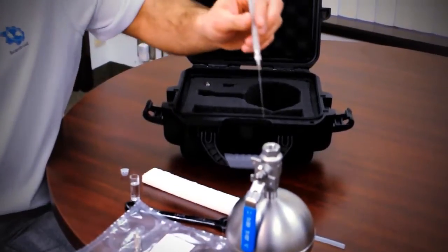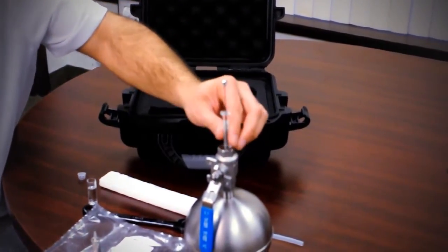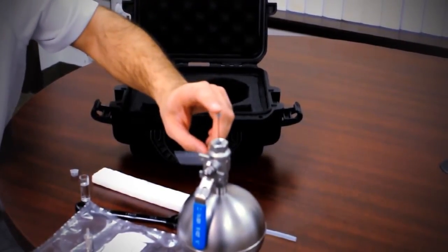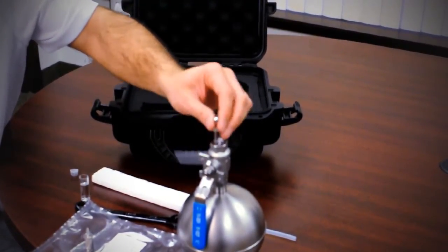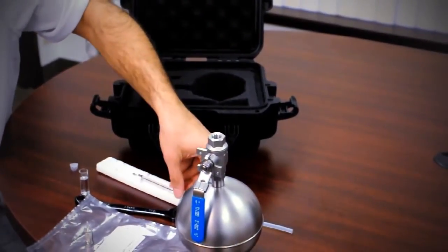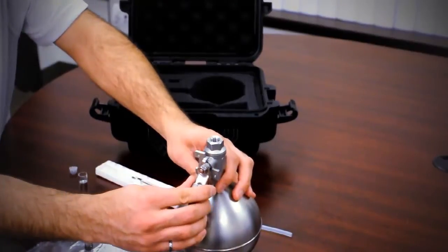We then insert the syringe all the way into the canister, empty out the syringe, shake it to make sure everything gets into the canister, and close the valve.